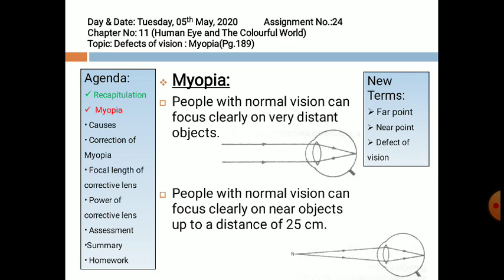Defect of vision: if a clear image of an object which is very far or very near is not formed on the retina, then this is known as defect of vision. People with normal vision can focus clearly on very distant objects. We say that their far point is at infinity. As shown in the figure, two parallel rays coming on the eye lens represent an object which is at infinity, and after passing through the eye lens, they are converging and meeting at the retina, forming an image at the retina.